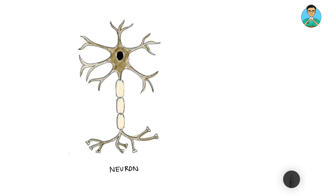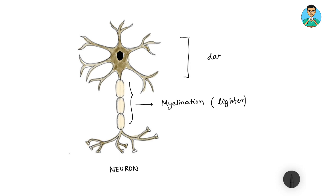Most of the neurons in the human body, except a few exceptions, have myelination. This myelination appears a bit whiter or lighter in color than the color of the cell body, dendrites, or axonal terminals. This is the reason that the myelinated part appears lighter and the rest of the part appears darker.